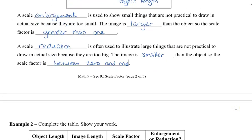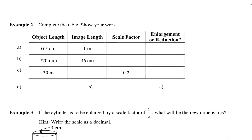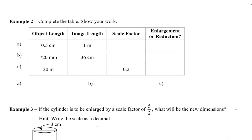Let's take a look at some examples of how to find the scale factor. Here's a table where we have the object length and the image length, or maybe even the scale factor. To find the scale factor we take the image length and divide by the object length. In this first one we have 0.5 centimeters, but the image is actually one meter, so we need to convert the one meter to be 100 centimeters.